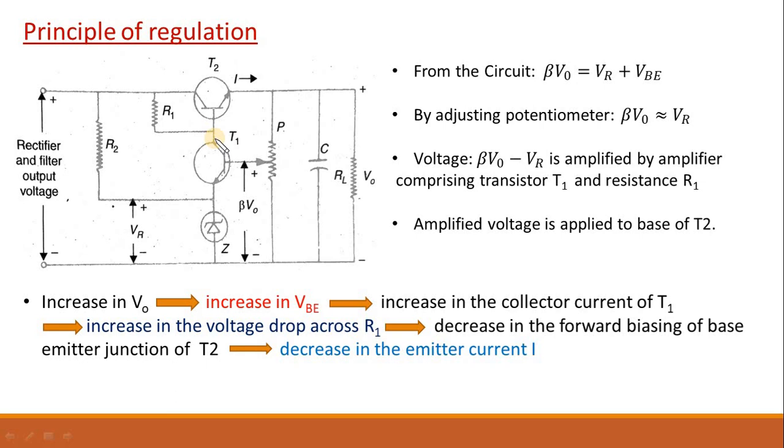As this collector current will pass through the resistance R1, there will be increase in the voltage drop across R1. As voltage drop across R1 increases, it will decrease the forward bias of the base emitter junction in transistor T2, which is obvious from this part of the circuit. As the forward bias of base emitter junction of T2 decreases, it will decrease the emitter current in the transistor T1. As this emitter current is passing through the load, it will decrease the voltage drop across the load. So, that's how initial increase in the output voltage will get reduced and voltage will be stabilized.